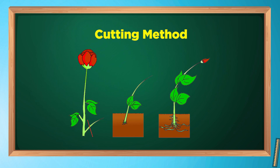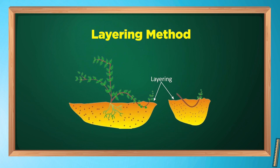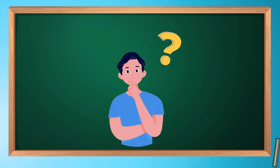The cutting method can also be used for sugarcane, hibiscus, and bougainvillea. In some plants like jasmine and grape, some branches are lowered and covered with soil. When roots grow, we cut them and plant them into the soil to grow into a new plant. This artificial way of reproduction is called the layering method.